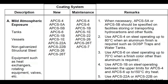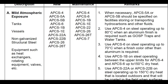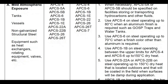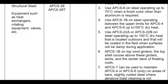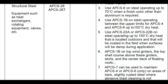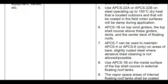Point 4: Use APCS1B on steel operating between the upper limit for APCS4 and APCS6, up to 150°C dry heat. Point 5: Use APCS22A or 22B on steel operating up to 150°C dry heat that is located outdoors and will be coated in the field when the surface will be damp during application. Point 6: Use APCS1B on top wind girders, the top shell course above these girders, skirts, and the center deck of floating roofs.